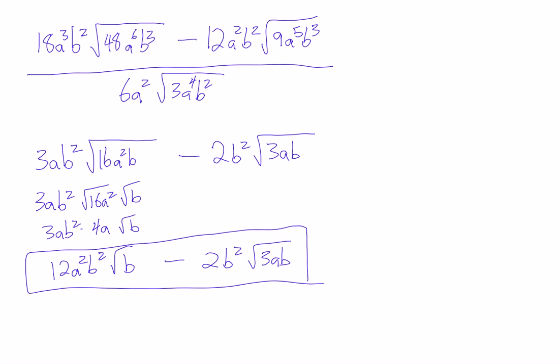So for multiplying, you multiply the numbers; for dividing, you divide the numbers. And in both cases, always simplify as much as possible at the end. And that's all.